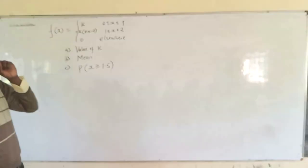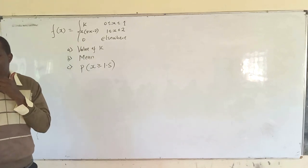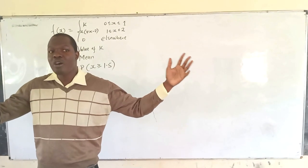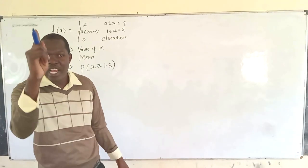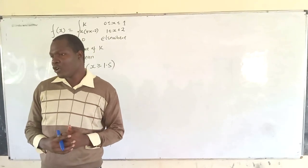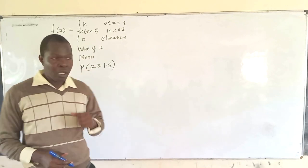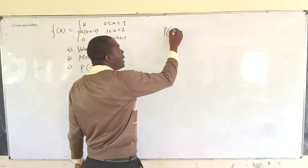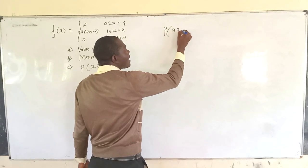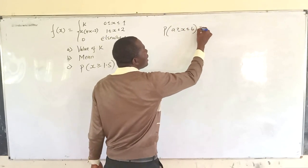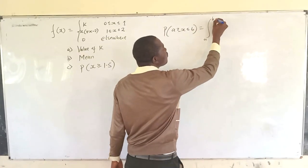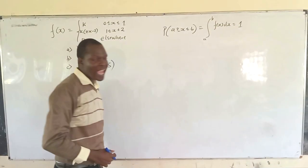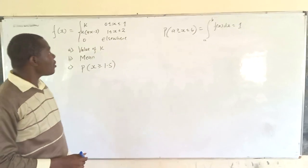For the first part, to get the value of constant k, we know that if we integrate the probability density function over the whole range, we are supposed to get 1. So it means the probability that x is between a to b — when you integrate from a to b of the probability density function — you are supposed to get 1.